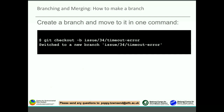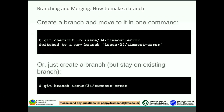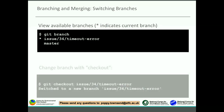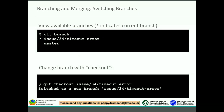To make a branch, use the command git checkout -b followed by your branch name. This creates a branch and moves you to it in one command. It gives you a message saying 'switched to new branch' with the name. It's also possible to just create a branch without switching to it by using git branch followed by the issue name. To find out what branches you have, use git branch - the asterisk indicates the current branch. To change branches, use git checkout followed by the branch name.